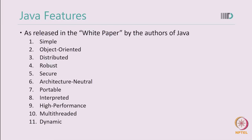Java has several features. I will go through the basic features that were pointed out in the white paper released at the time of the Java release: simple, object-oriented, distributed, robust, secure, architecture-neutral, portable, interpreted, high performance, multi-threaded, and dynamic.